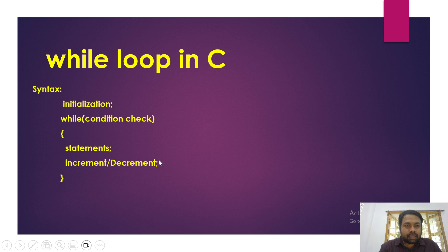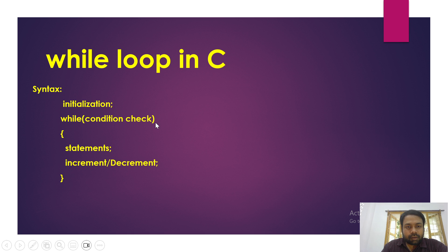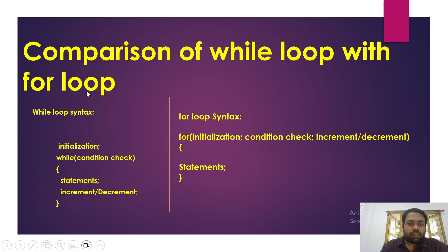First, let us look at the syntax, and thereafter I will explain how the while loop works. For initialization, we write the starting value. After that we use the keyword 'while', and within the bracket we write the condition — the starting point and ending point. Don't write any semicolon there. Within the block — open bracket and close bracket — we write the statements we want to execute. If you are moving forward, the value should be incremented; if you are going from a greater value to a smaller value, it should be decremented.